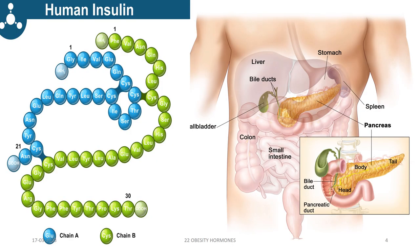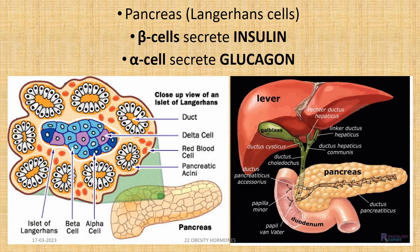First, foremost and most important is human insulin, which is a peptide synthesized by the pancreas comprising two chains — chain A and chain B — known as a double-chain peptide. Our pancreas has tissue islands known as Langerhans cells. There are two types: beta cells and alpha cells. Beta cells secrete insulin hormone and alpha cells secrete glucagon hormone.